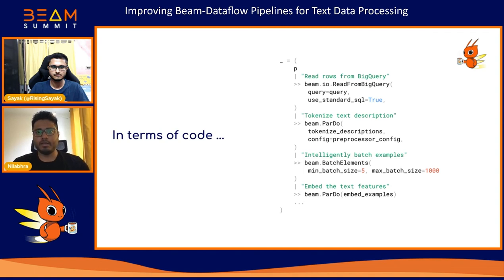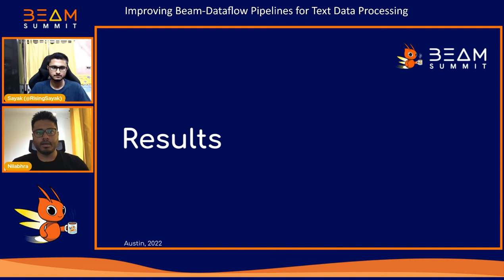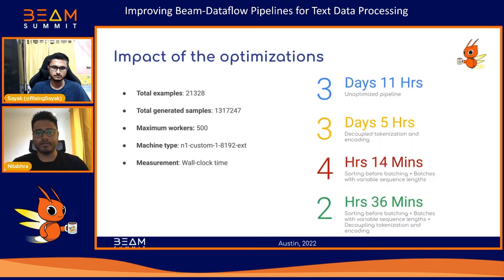In sub-step three, one thing to keep in mind is to unsort the embeddings once the batch operations are done. The steps we saw can be implemented as shown — the function 'embed_examples' performs the sorting, padding, and unsorting of embeddings. Looking at performance gains: the unoptimized pipeline uses fixed-length padding, padding all sentences to 512 tokens. From three days and 11 hours, we bring the wall clock time down to two hours and 36 minutes after applying all optimizations — including decoupling tokenization from encoding and sorting before batching.